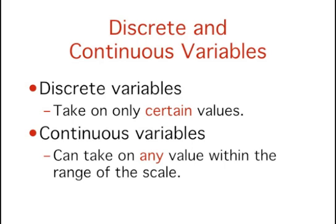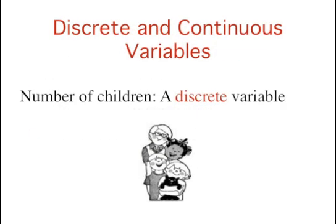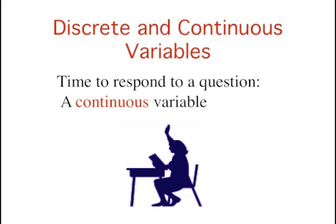Another important distinction is between discrete and continuous variables. Discrete variables can take on only certain values, while continuous variables can, theoretically, take on any value within the range of the scale. Variables such as number of children in a household are discrete since the possible scores are discrete points on a scale — for example, a household could have three children or six children, but not 4.53 children. Other variables, such as time to respond to a question, are continuous since the scale is not made up of discrete steps — the response time could be 1.64 seconds or 1.64237 seconds. Of course, the practicalities of measurement preclude most measured variables from being truly continuous.